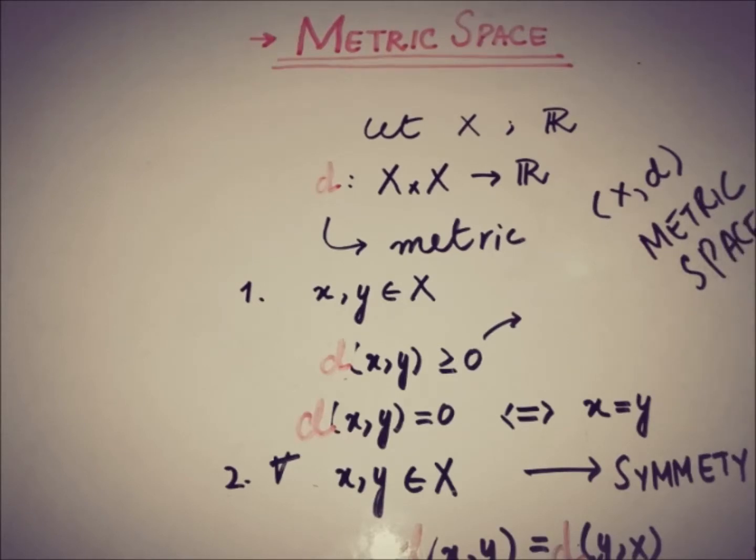As we see in topological space where (X, tau) is a topological space where tau is a topology on X, so here (X, D) is a metric space where D is a metric on X and D has the following properties.